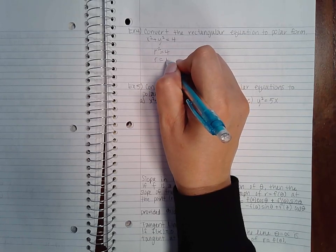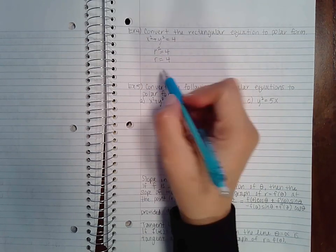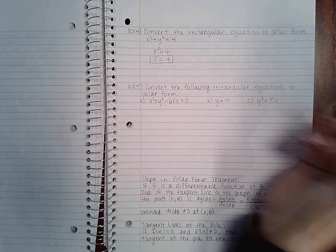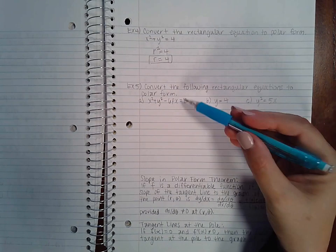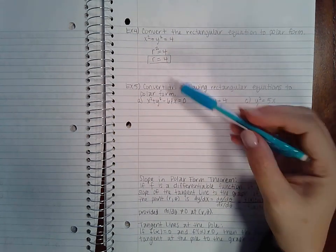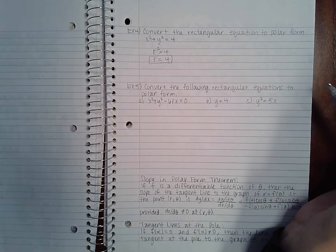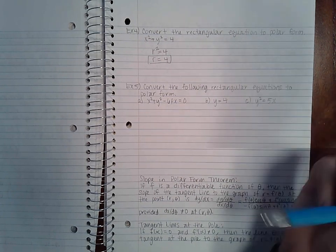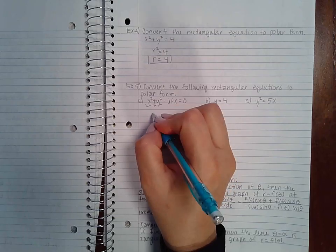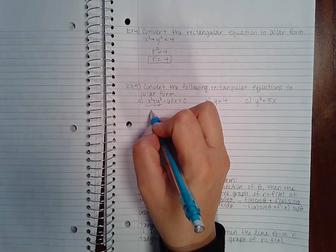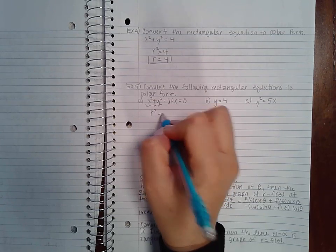So there's my equation in rectangular form, and here it says convert to polar form. It says convert the following rectangular equations to polar form. So again, we know this is r squared and x we know is r cosine theta.